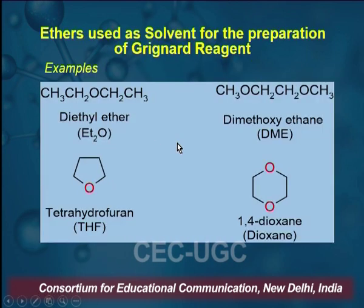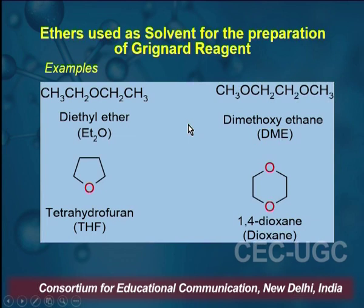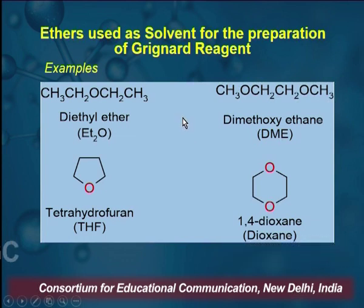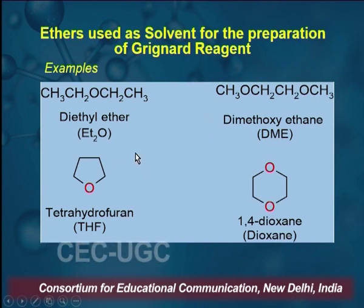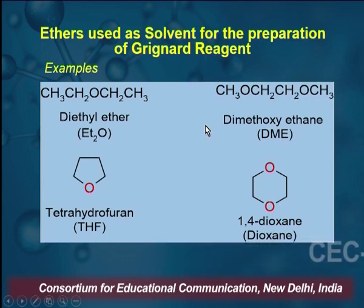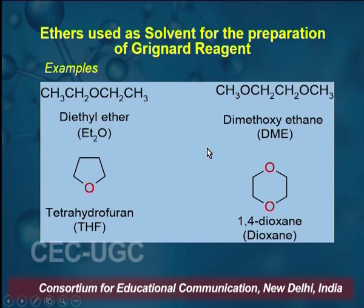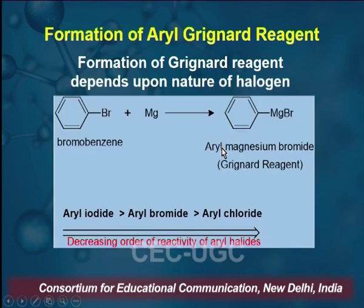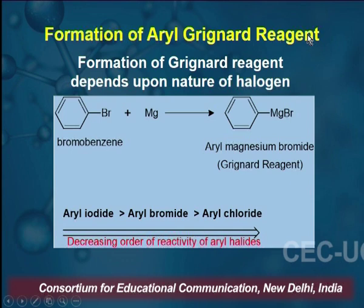A variety of ethers are used in the preparation of Grignard Reagent. They are diethyl ether (referred to as Et₂O), dimethoxyethane (DME), tetrahydrofuran (THF), and 1,4-dioxane. All these ethers are suitable for the preparation of Grignard Reagent.